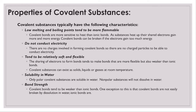Covalent substances tend to be relatively soft and flexible. The shared pair of electrons forms a more flexible bond than an ionic bond. Covalent substances can exist as solids, liquids, or gases at room temperature. Regarding solubility in water, only polar substances are soluble in water because water is polar — only polar substances can dissolve in other polar substances. Nonpolar substances are not going to be able to dissolve in water.